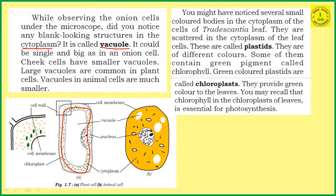It could be a single and big vacuole in the onion cell. When observing onion peel cells, the empty place is called a vacuole — specifically a single vacuole, just one vacuole, which we observe in these cells. Cheek cells have smaller vacuoles. When observing human cheek cells, vacuoles are present but much smaller. Presence of large vacuoles is common in plant cells. Vacuoles in animal cells are much smaller when compared to plant cells.